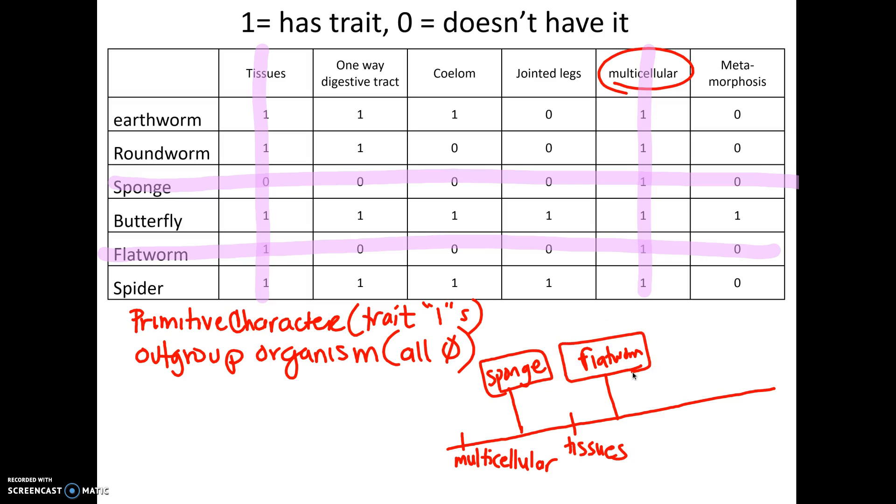All right, now we're going back to traits. Is there a trait now that everybody has? And yes, there is a one-way digestive tract. So I'm just going to write one way here just to speed things along. One-way digestive tract. Now, again, back to organisms. The next organism would be our roundworm. Has all zeros. So that's going to be next. Roundworm.